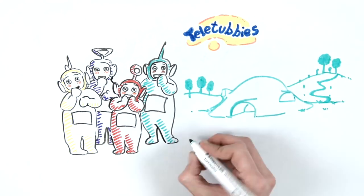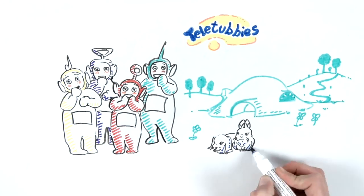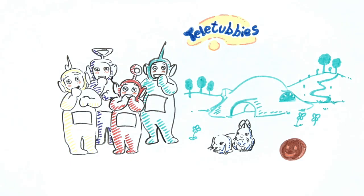Tinky Winky, Dipsy, Lala and Poe lived in a grassy floral landscape populated by rabbits, a baby son and full of Tubby Toasts.